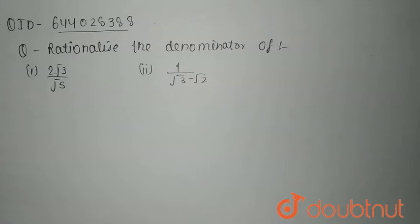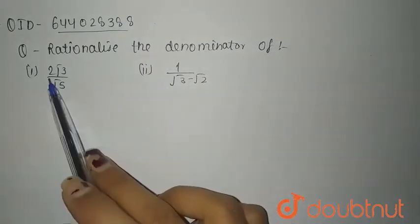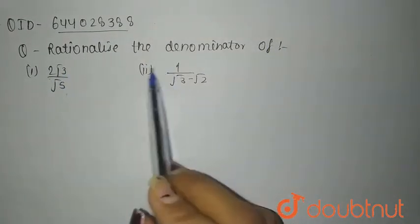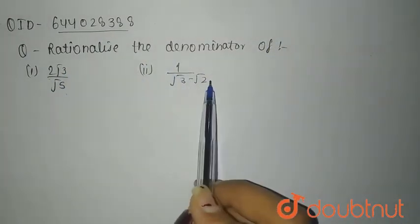Hello everyone. So the given question is: rationalize the denominator of 2√3/√5 and 1/(√3 - √2).